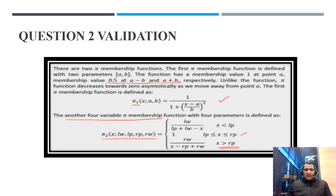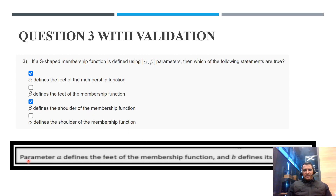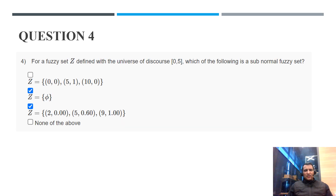Question 3: For an S-shaped membership function defined using alpha and beta parameters, which statement is true? Alpha defines the foot of the membership function and beta defines the shoulder. For cross validation, the video confirms that parameter alpha defines the foot and beta defines the shoulder.